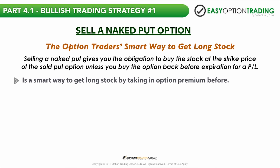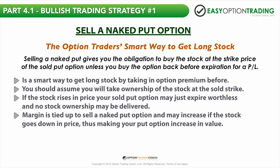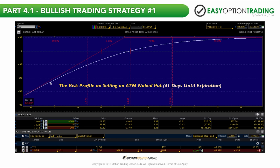Selling a naked put option is a great way to get long shares of stock, taking in that extra option premium before you get long. When you sell a put option you have to tie up margin — tie up buying power — so you can put this trade on. This red line is explaining the risk profile on selling an at-the-money naked put. That line right there is your break-even; your break-even is at $17. Why? Because you're selling an $18 strike price put for a dollar, which brings your cost basis down.